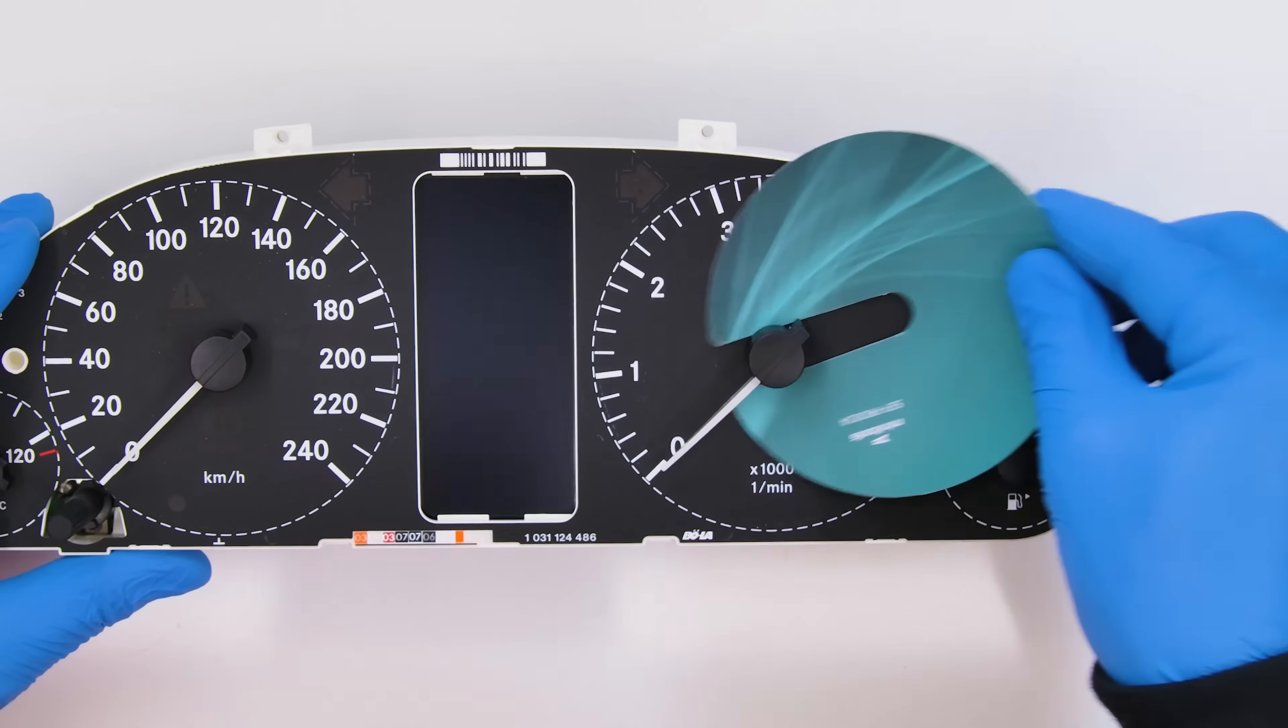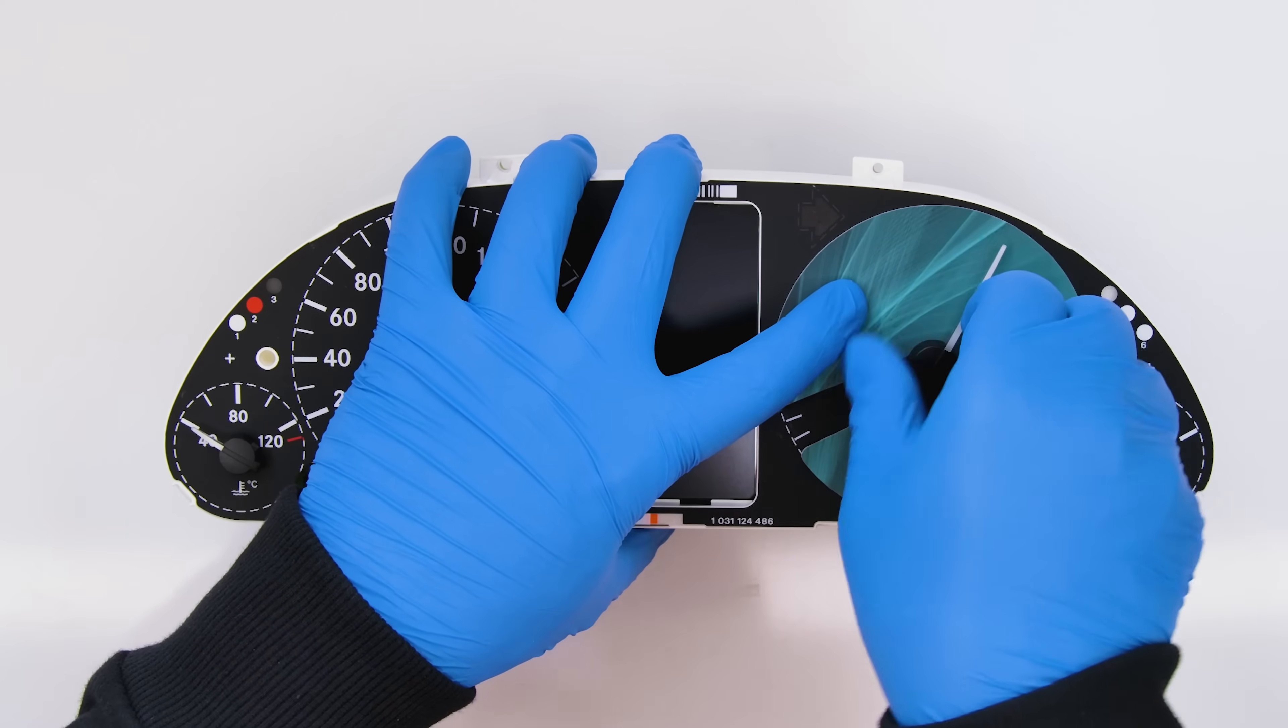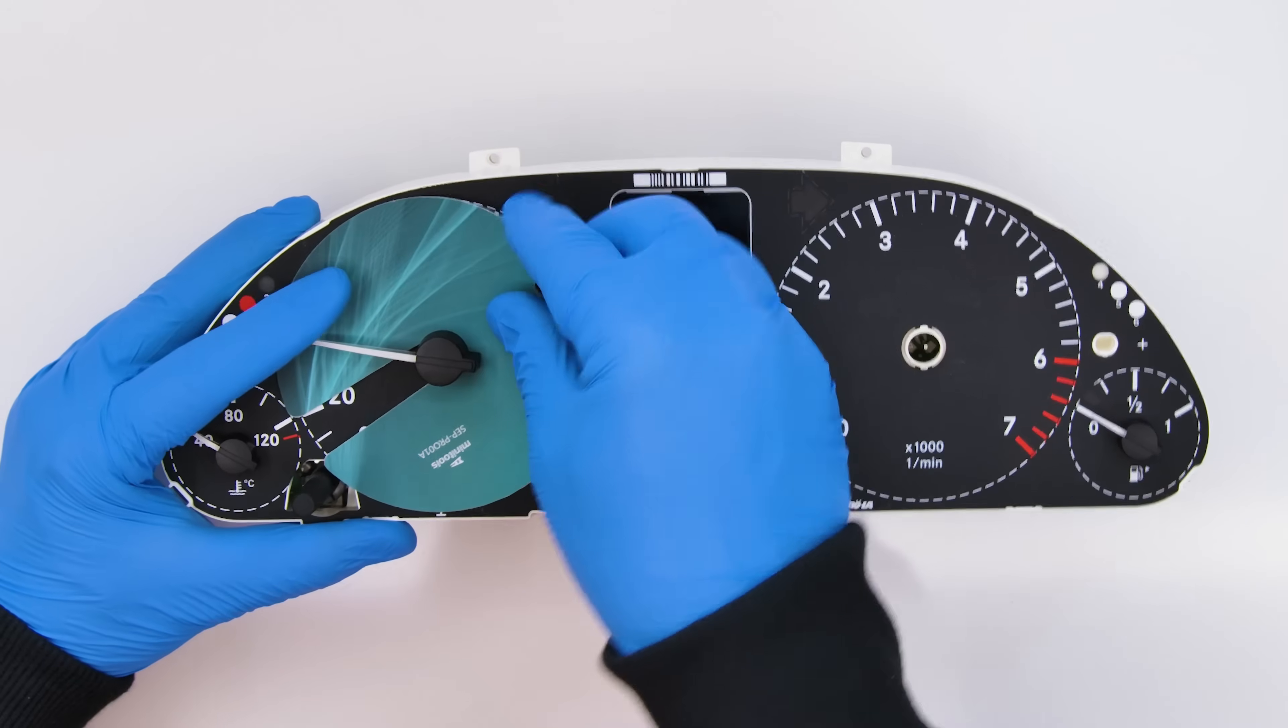Fit the gauge face protective discs under the needles and remove them rotating anticlockwise and gently pulling them.